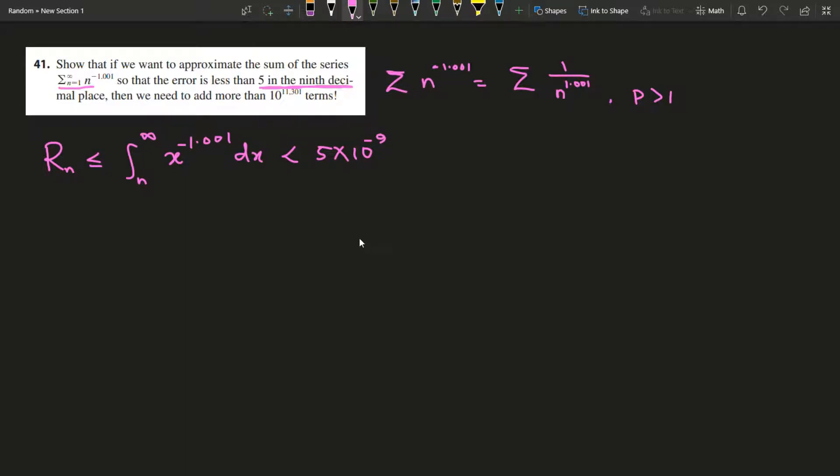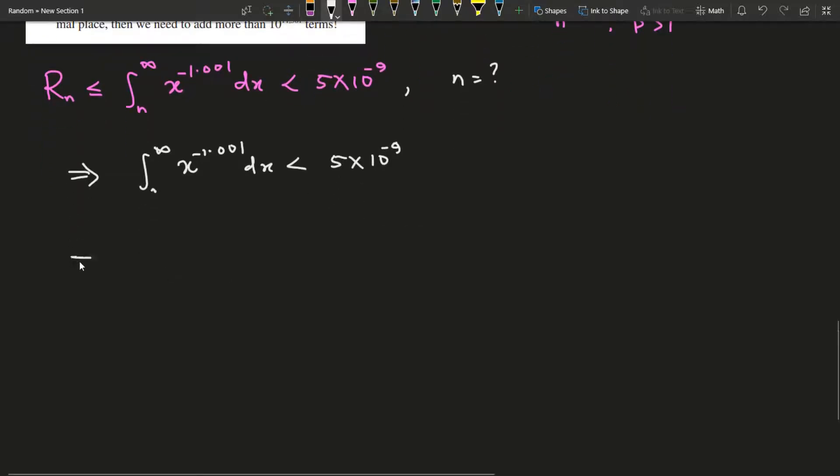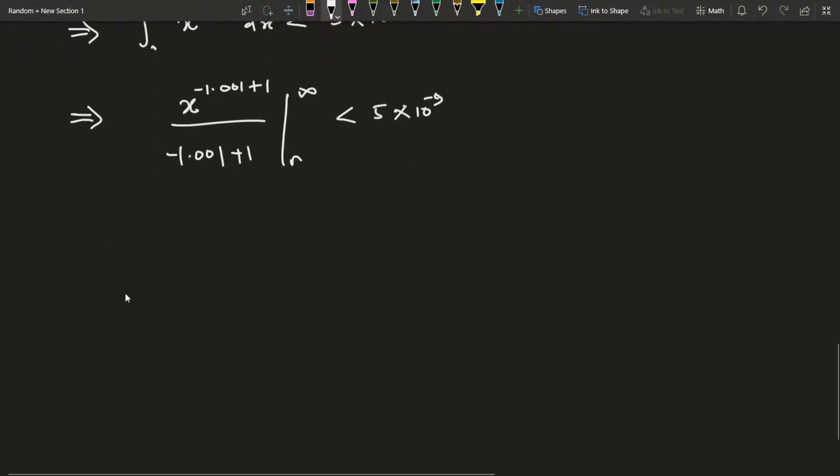The problem reduces to finding n that satisfies this inequality. If you integrate this, add 1 to the power then divide, and evaluate from n to infinity. This is x to the negative 0.001 over negative 0.001 evaluated from n to infinity, less than 5 times 10 to the negative 9.